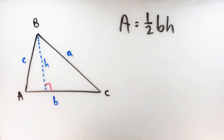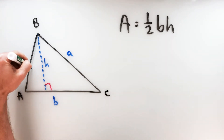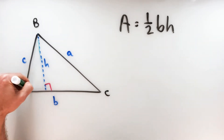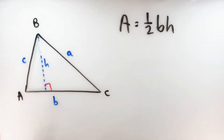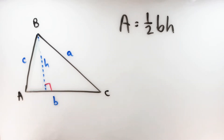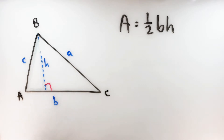We know the area of a triangle is half base times height. So we're going to use trigonometry to express the height of this triangle in terms of the sides and angles. Take a look at this smaller right triangle on the side. Using acute angle A, I'm going to use a sine ratio to write H in terms of the other sides and angles. Sine of angle A — remember, sine is opposite leg over hypotenuse.